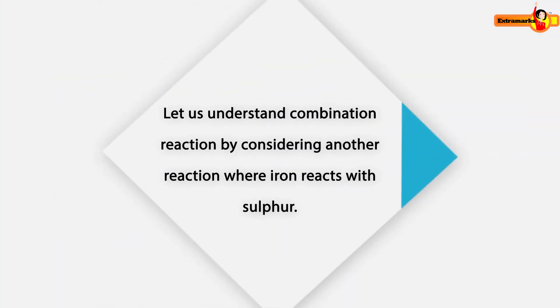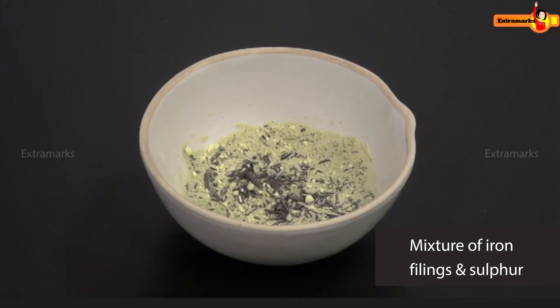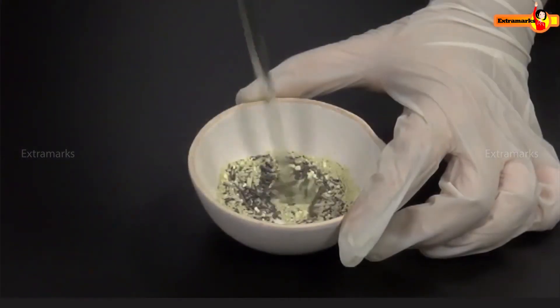Let us understand combination reaction by considering another reaction, where iron reacts with sulphur. Take iron filings and sulphur in a china dish. Mix them and heat the mixture.